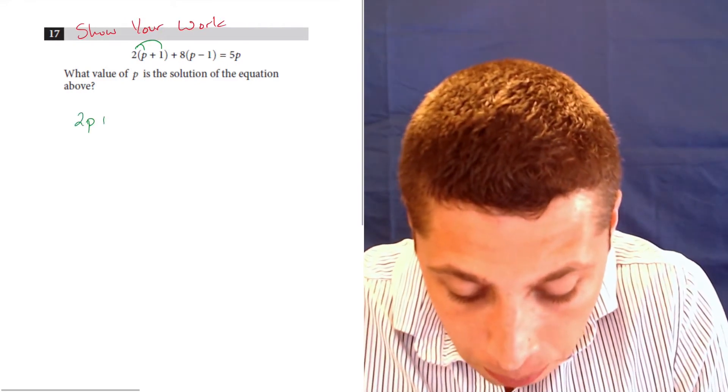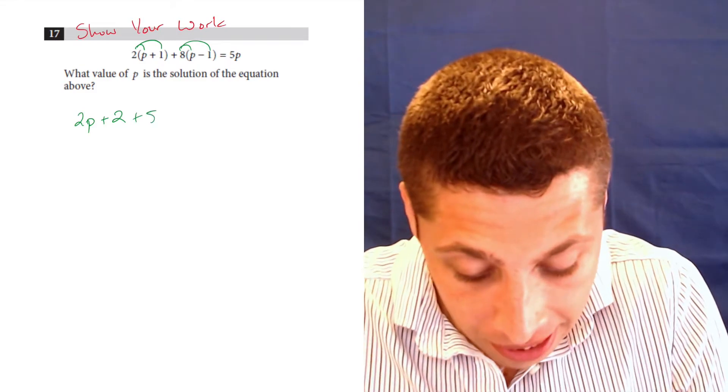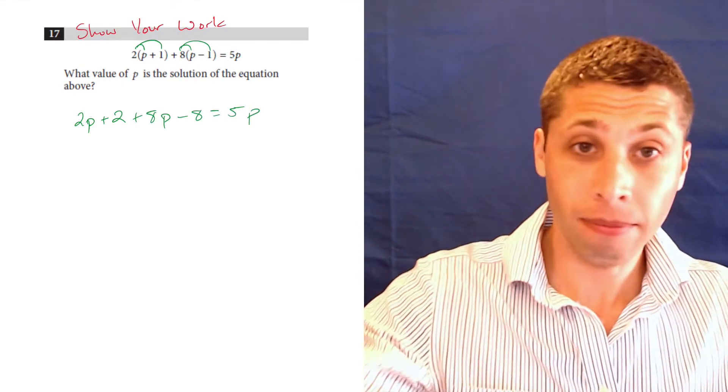So 2p plus 2, okay. 8 goes to both parts, so plus 8p minus 8 is equal to 5p. Simple.